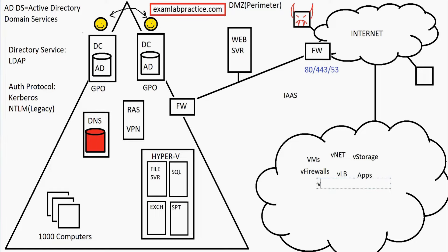They can have virtual databases hosted in the cloud. Essentially, just about anything you can host on-premise can be hosted in the cloud service. Amazon, Google, IBM, Intel, and Microsoft all offer this. Microsoft's cloud IaaS service is called Azure.